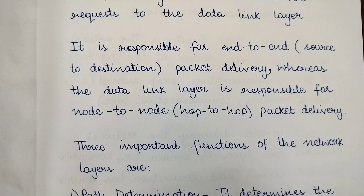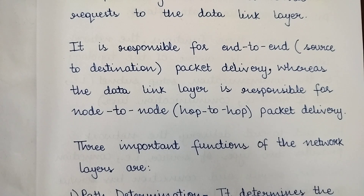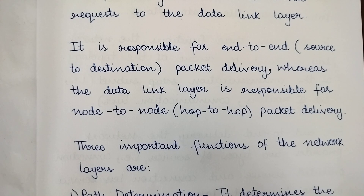When both the network layer and the data link layer perform packet delivery, the difference is that the data link layer takes responsibility only from one node to another node, whereas the network layer takes responsibility from the source all the way to the destination.